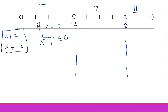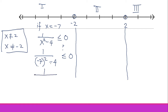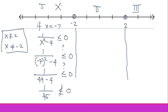For Region 1, let's pick x = −7. Plugging into 1 over x² minus 4: one over (−7)² minus 4 gives 1 over 49 minus 4, which is 1/45. This is positive, and every positive number is greater than zero — so this is FALSE. Region 1 is out as a solution.